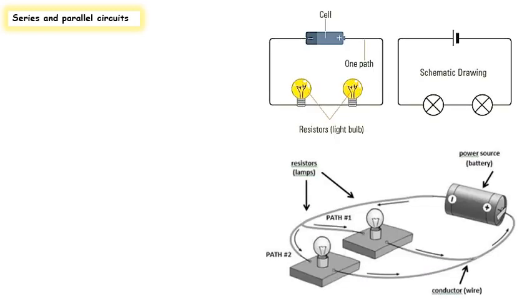The components of an electrical circuit can be connected in series or in parallel. Components connected in series are connected along a single conductive path. Electrons will leave the negative terminal of the battery and go in one pathway — they do not have a second choice. In a series circuit, we have one pathway for the electrons to go through.